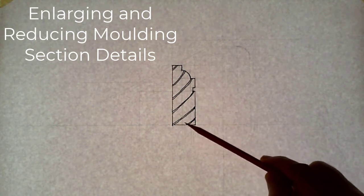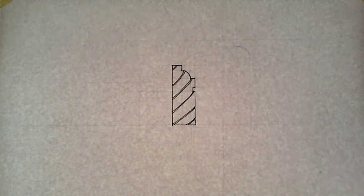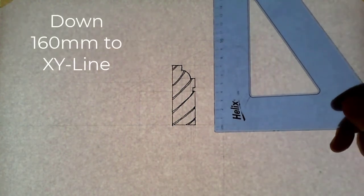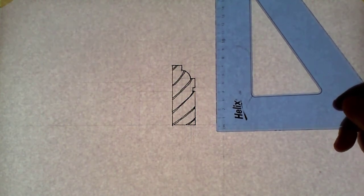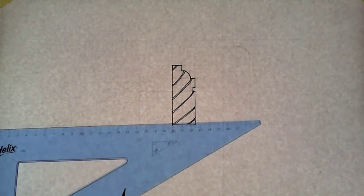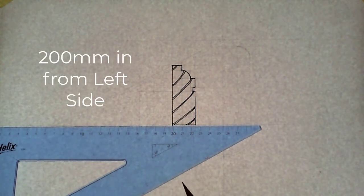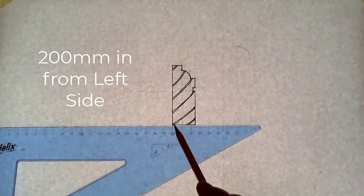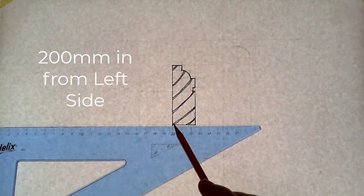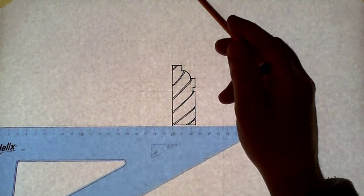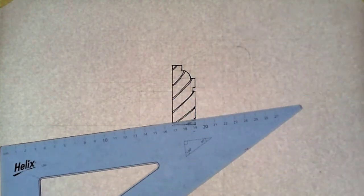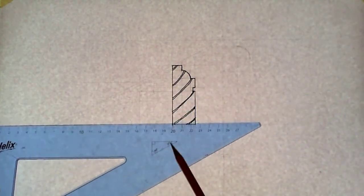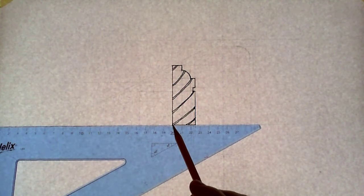The position for this moulding detail is down from the top of the sheet 160mm to the XY line, and in from the left-hand side of the sheet 200mm to the bottom left-hand corner of the moulding. So that's down 160mm and in to the bottom left-hand corner of the moulding, 200mm.